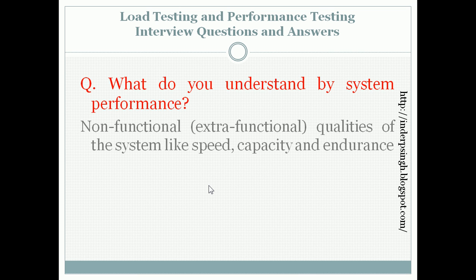System performance means the non-functional or extra-functional qualities of the system like speed, capacity, and endurance. We may find that our system has a response time of less than or equal to 2 seconds, or it can support 100 concurrent users at one time, or it can support 50 concurrent users for a total of 24 hours non-stop. System performance is also shown by less resource utilization, stability, and accuracy.